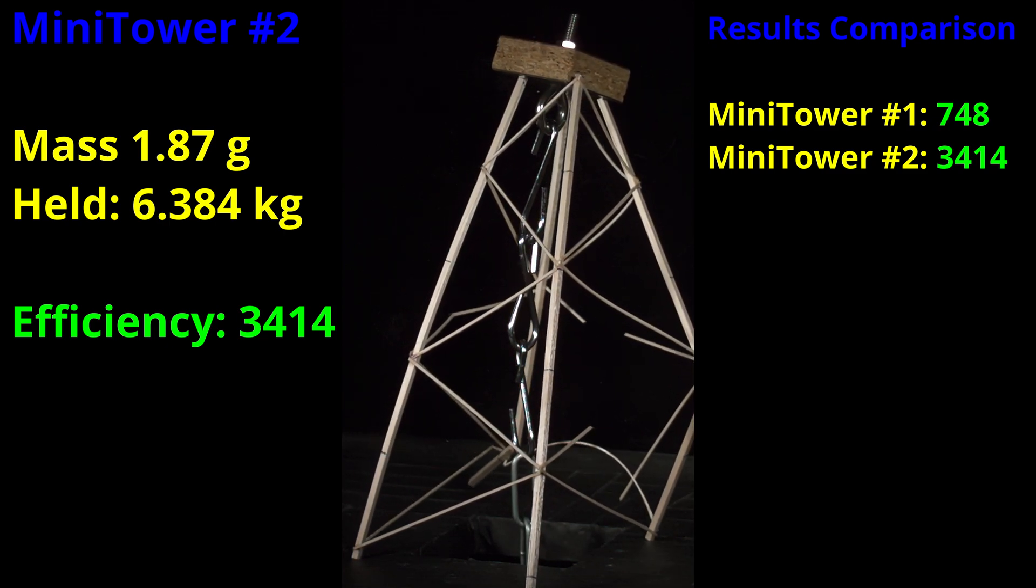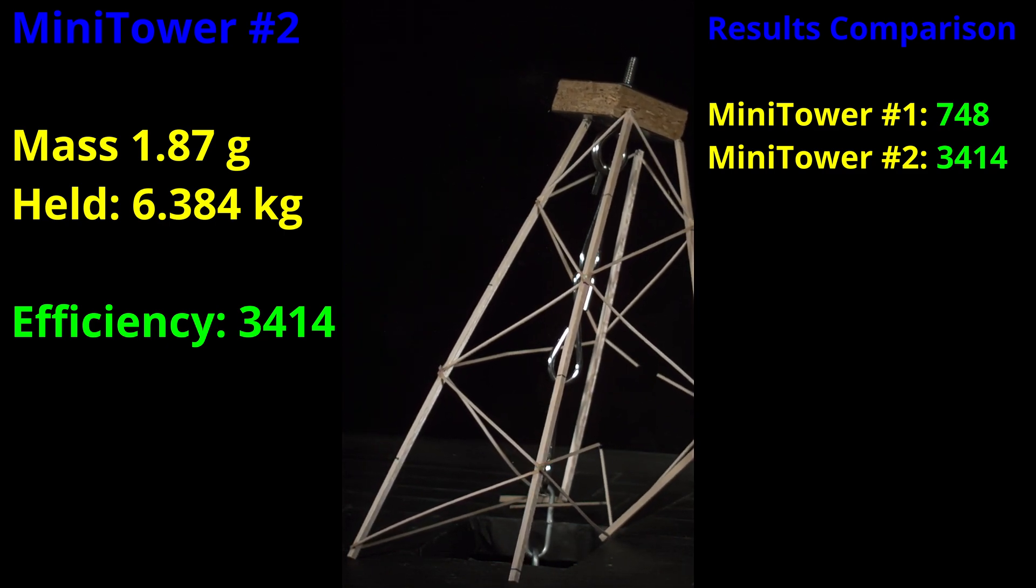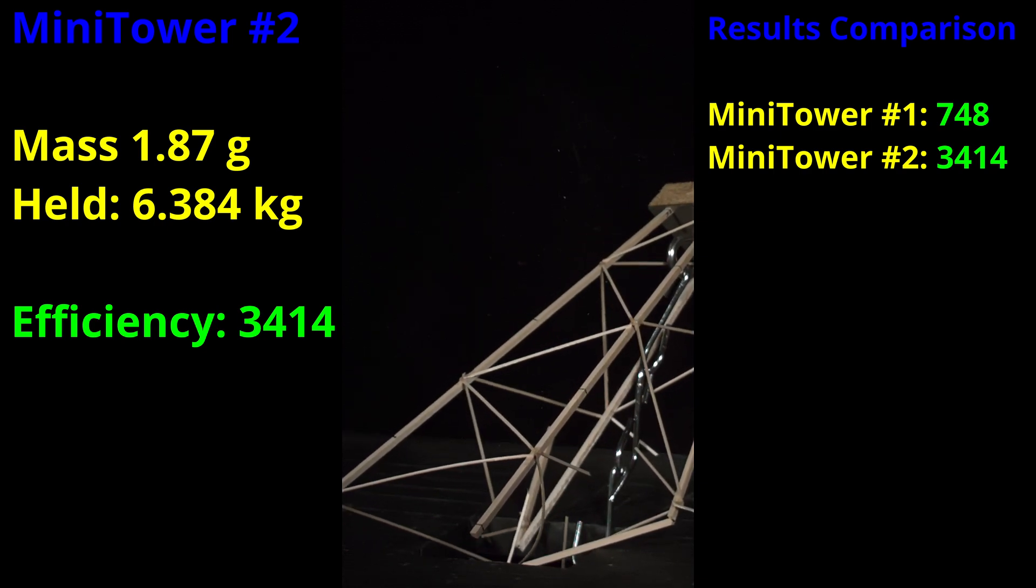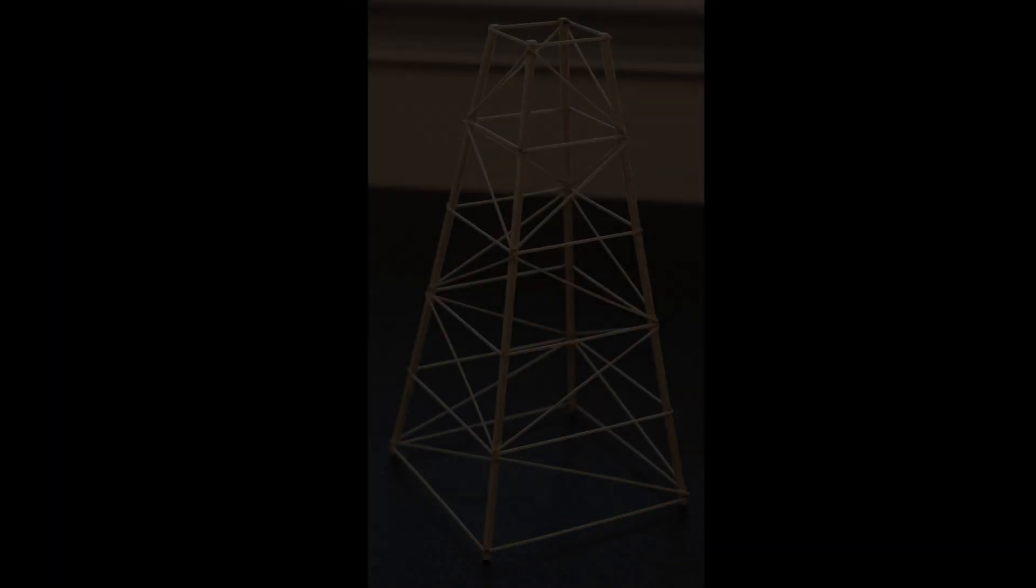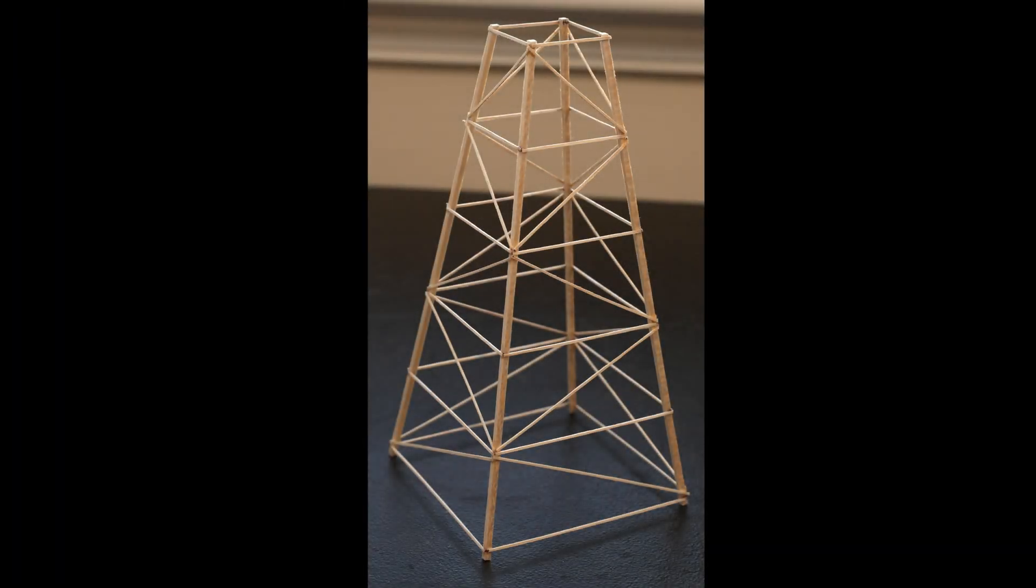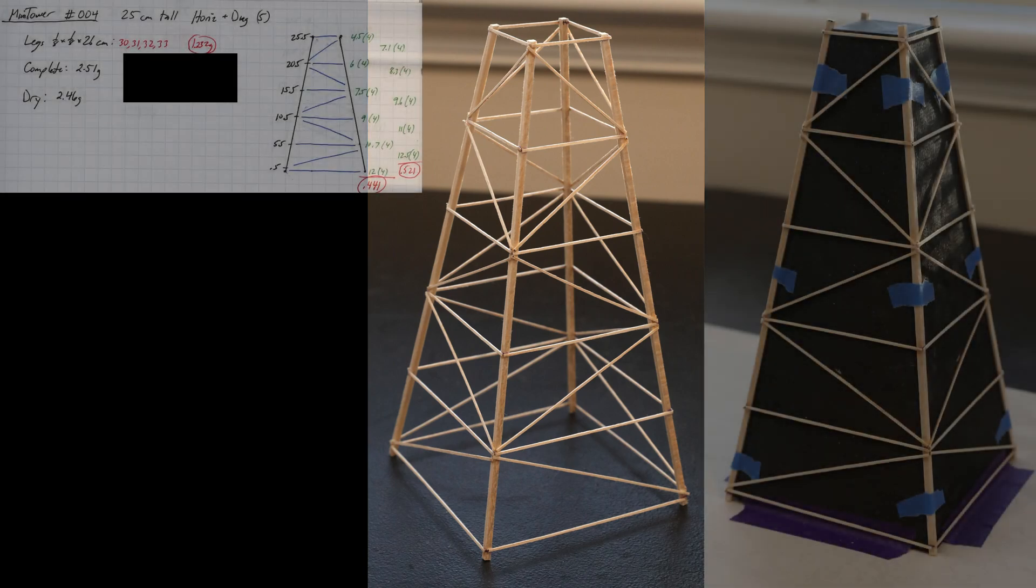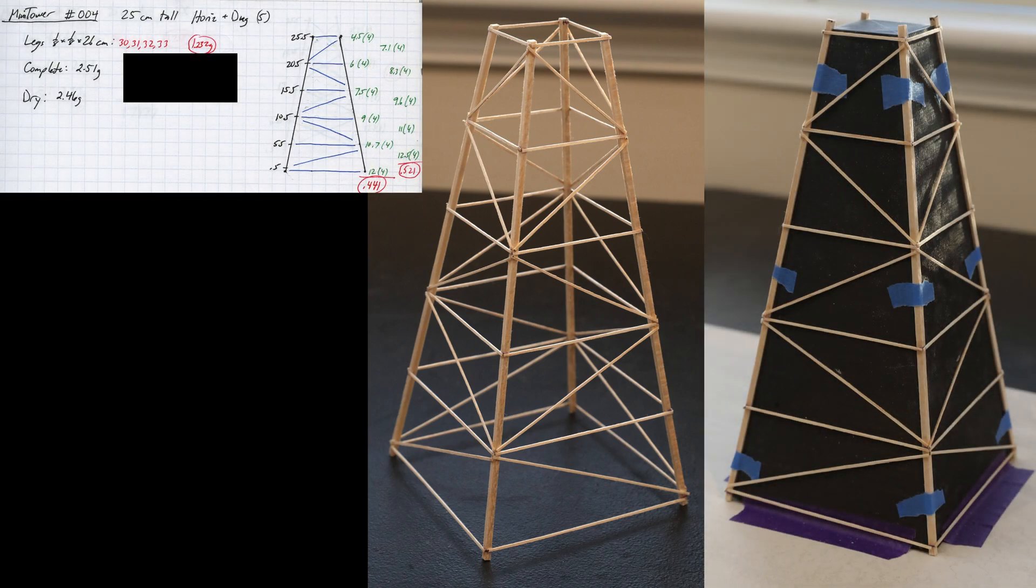In the next build, we'll explore what happens if we increase the overall cross bracing support by essentially combining the previous two designs to create a Z-shaped cross bracing pattern. As promised, here is tower number 3 where I've combined the horizontal cross bracing of tower number 1 with the diagonal cross bracing of tower number 2 to create a Z pattern for the cross bracing. The spacing of every 5 centimeters is the same as before. It's not unheard of to see real life tower designs that look like this, so let's take a look and see how it performs.